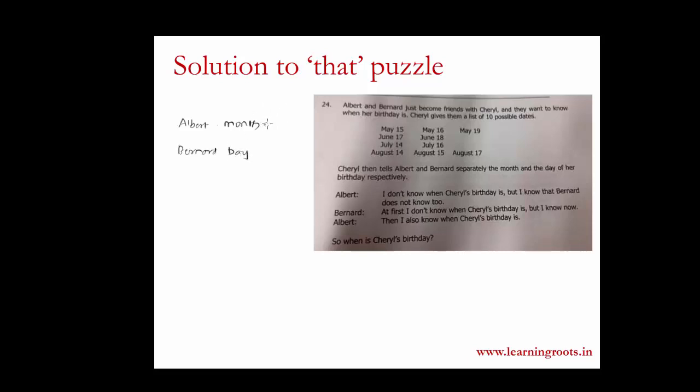The options with Albert are May, June, July or August. There are four options and with Bernard the options are 14, 15, 16, 17, 18 and 19.